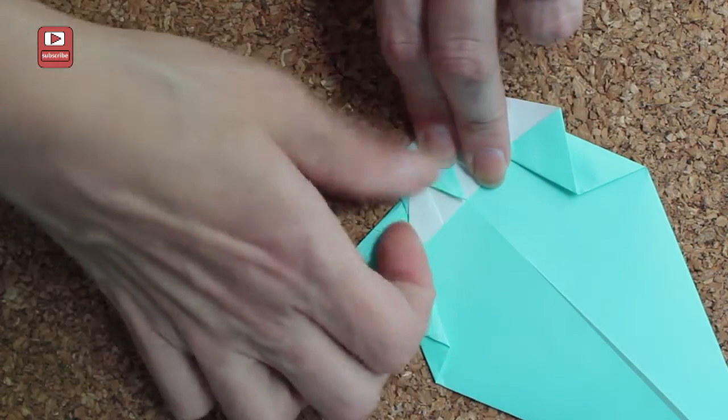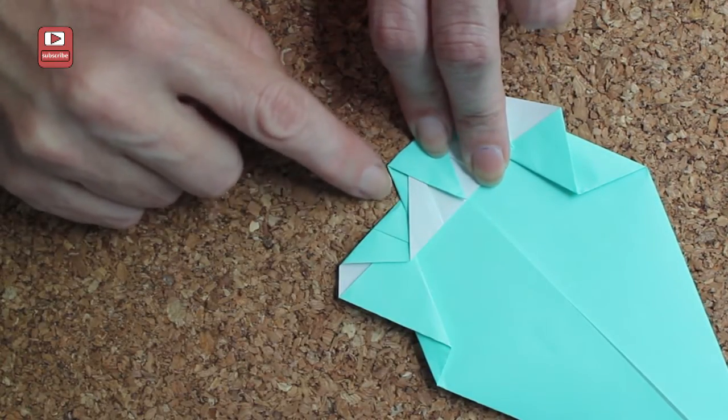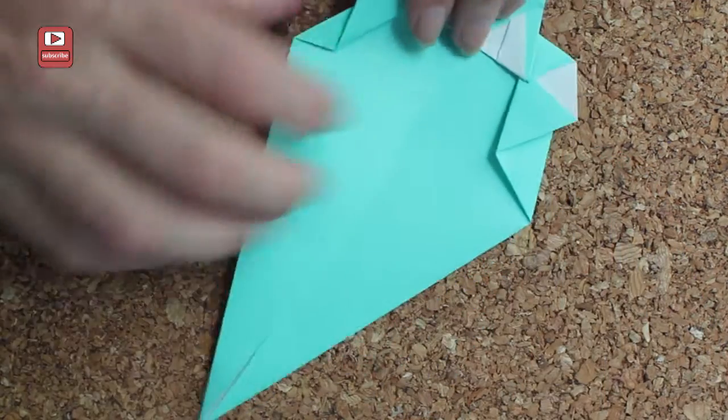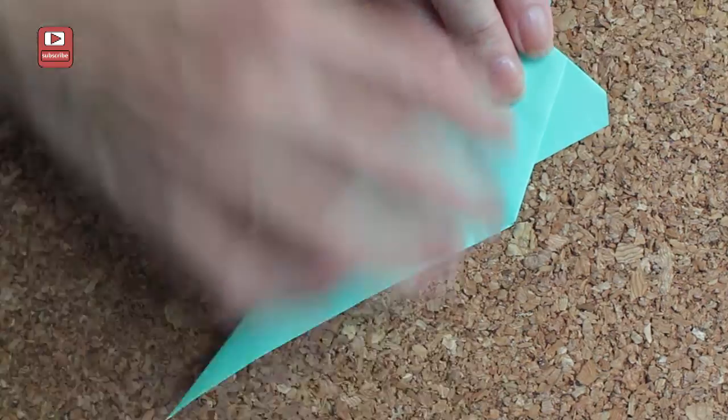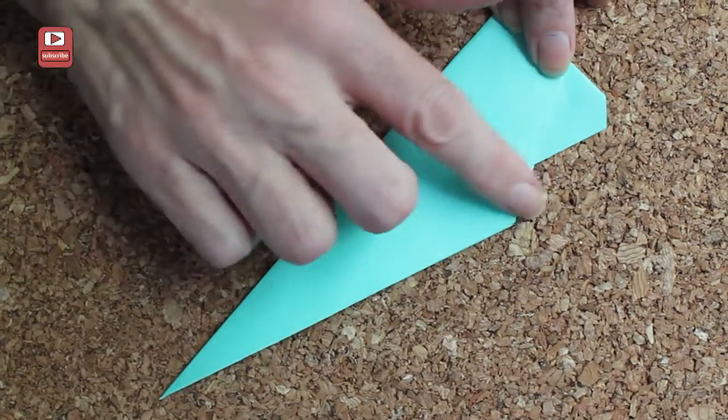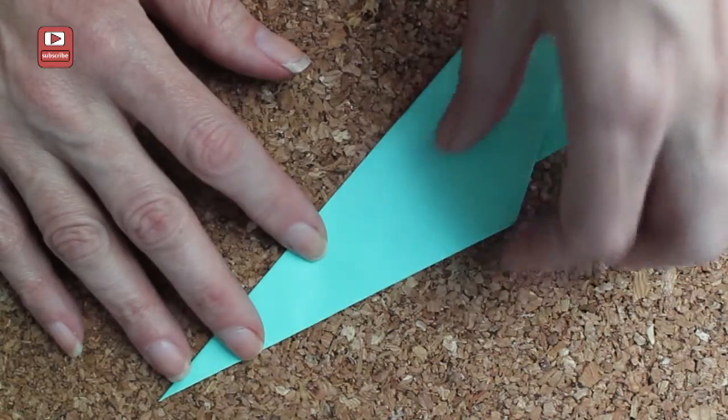So you're going to fold this in half. Make sure some of it is sticking out, like I said, for the tail. Then you're going to fold this in half. These are pretty evenly. That's good because this is the front.